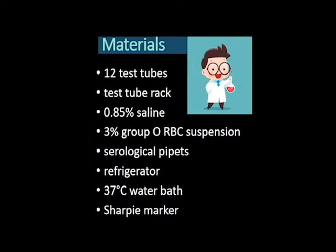The materials for the cold agglutination titer experiment will be: 12 test tubes, a test tube rack, 0.85% saline, 3% group O red blood cell suspension, serological pipettes, a refrigerator, a 37 degrees Celsius water bath, and a Sharpie marker.